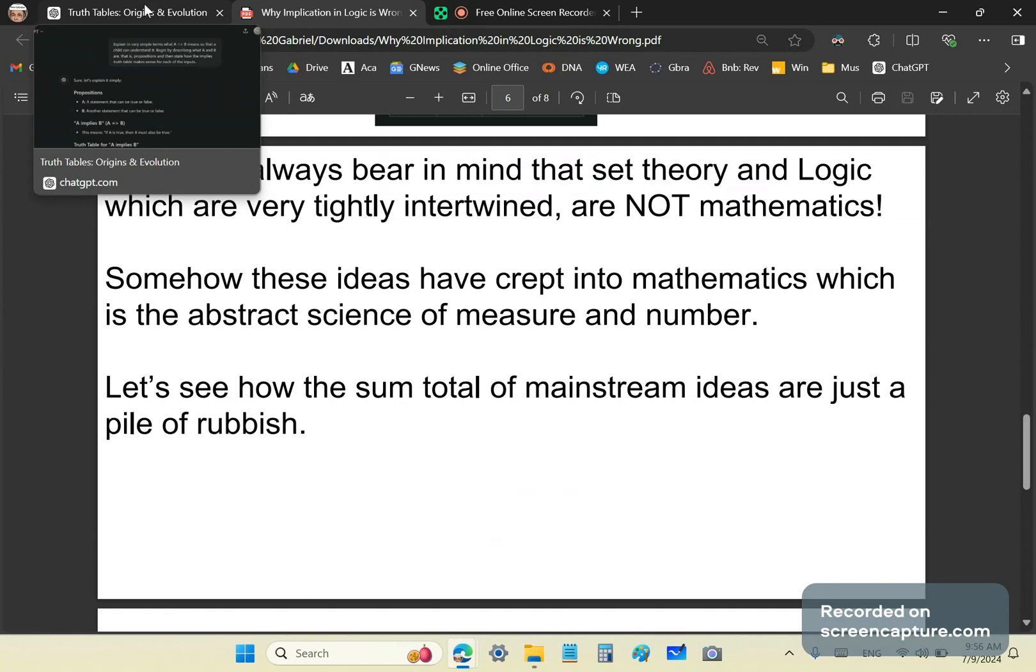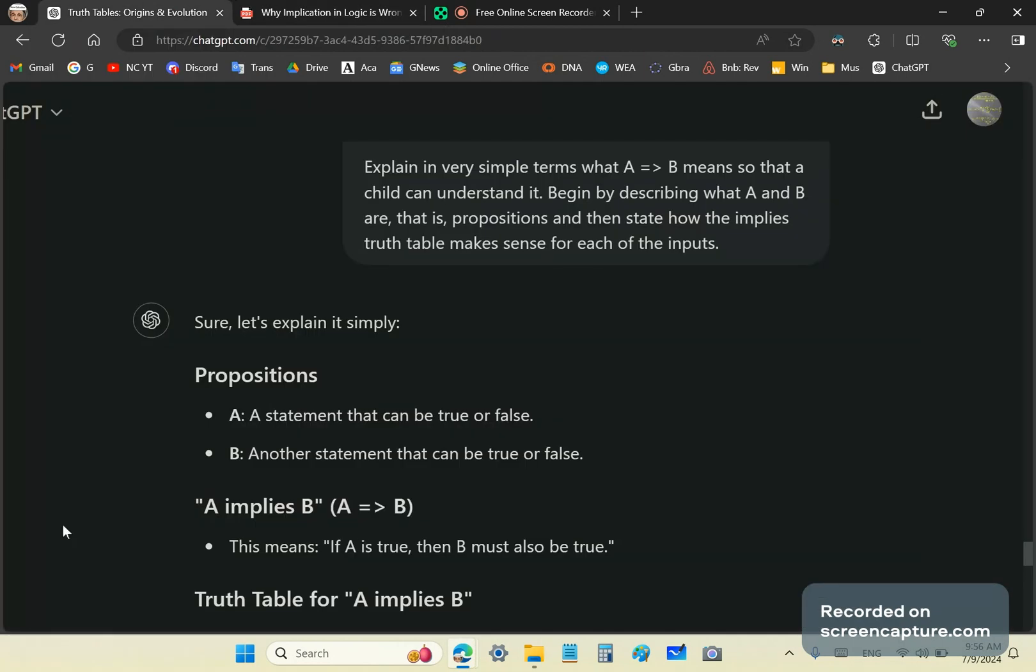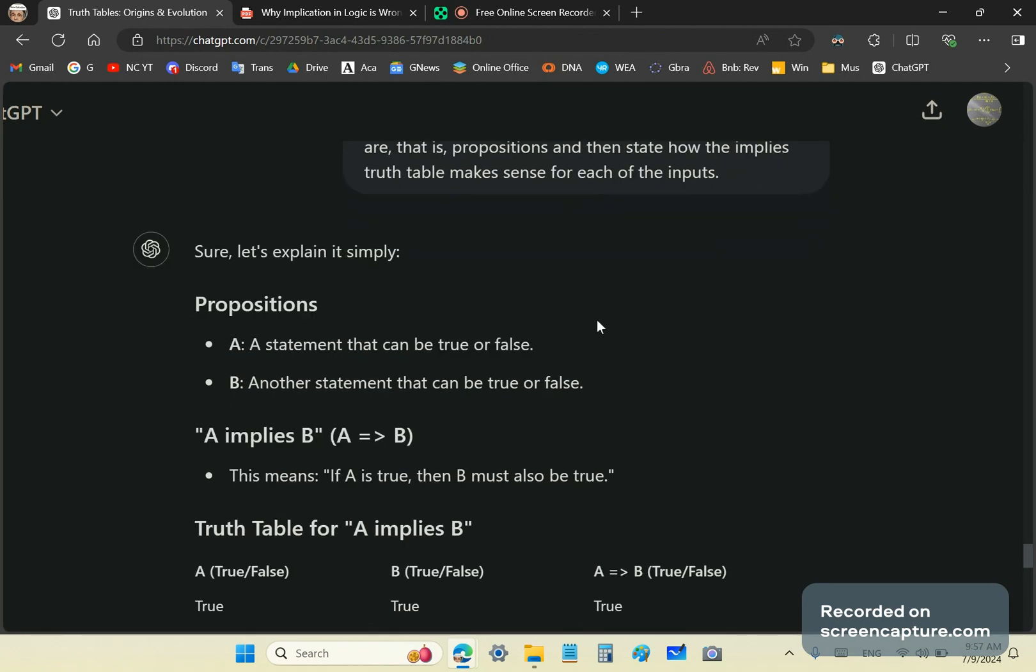We can do this because if we go to chat GPT-4, it's basically a repository of all mainstream ideas. So I ask GPT to explain in very simple terms what A implies B means so that a child can understand, and to describe what A and B are, that is propositions, and then state how the implies truth table makes sense for each of the inputs.